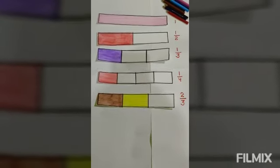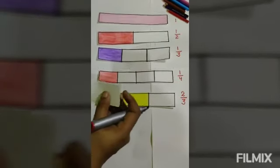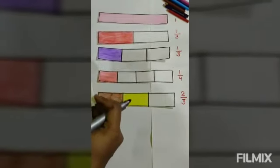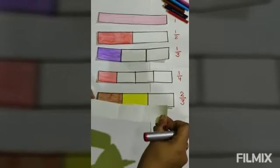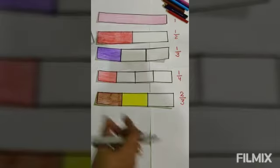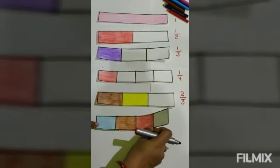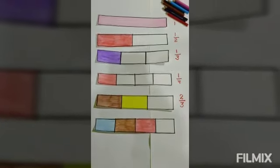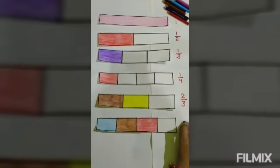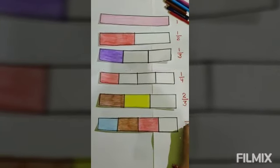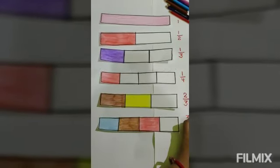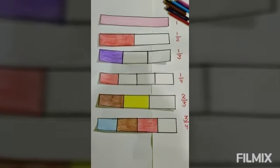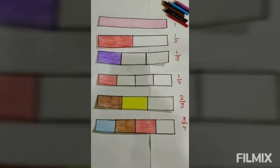Again we take one strip of paper and fold it into four equal parts. Now we color three parts out of those four equal parts. The total number of parts are four and the number of parts colored are three, so the fraction is three fourths.